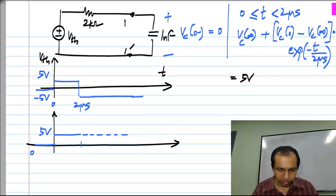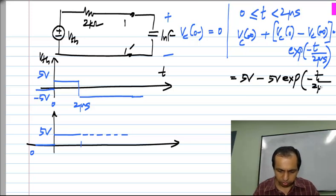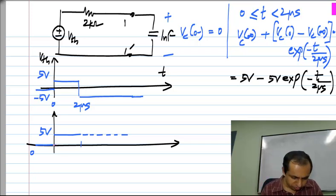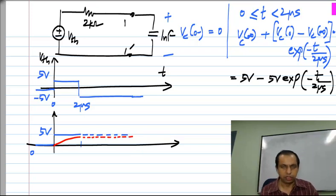Vc of infinity here is 5 volts plus Vc of 0 is 0 and we have minus 5. Essentially I have 5 volts minus 5 volts exponential minus t by 2 microseconds. And if I sketch that part, it will do something like that and it would eventually have reached 5 volts.